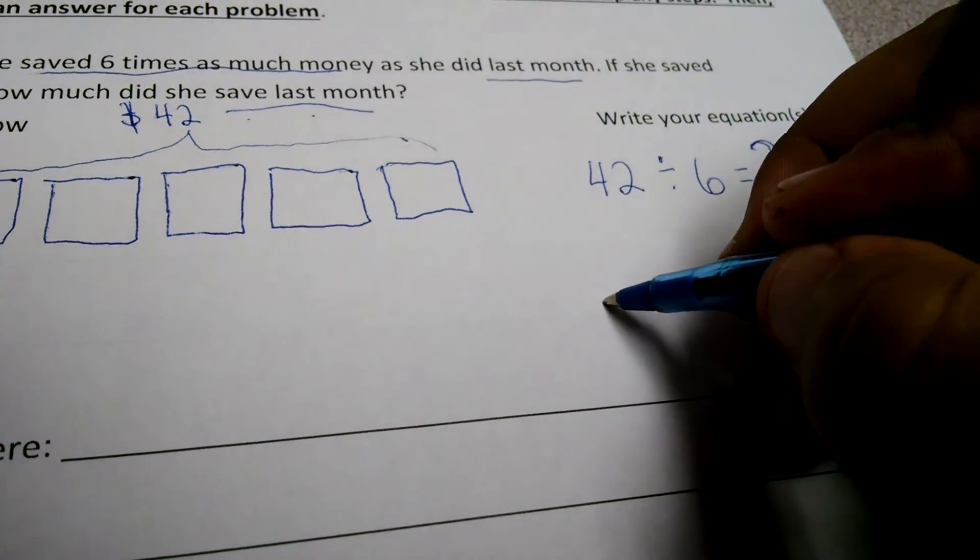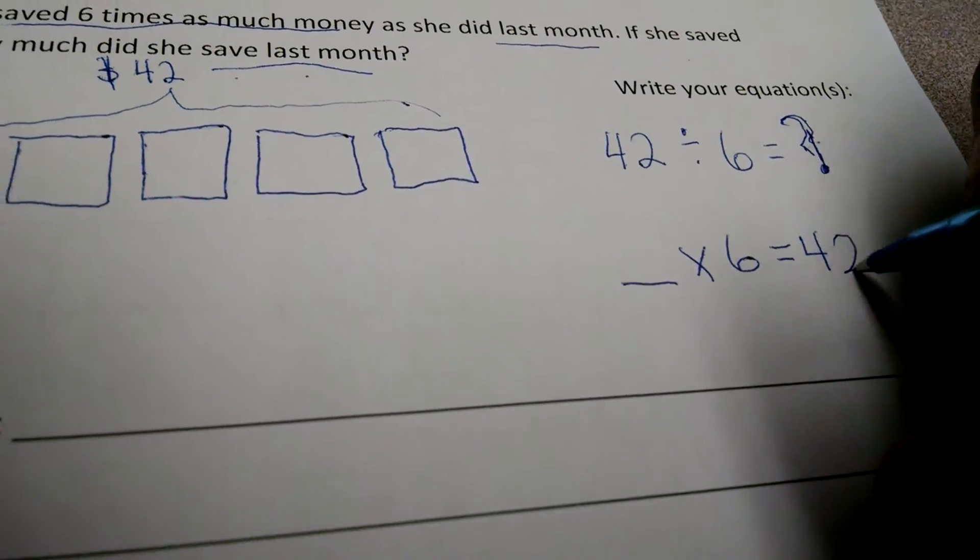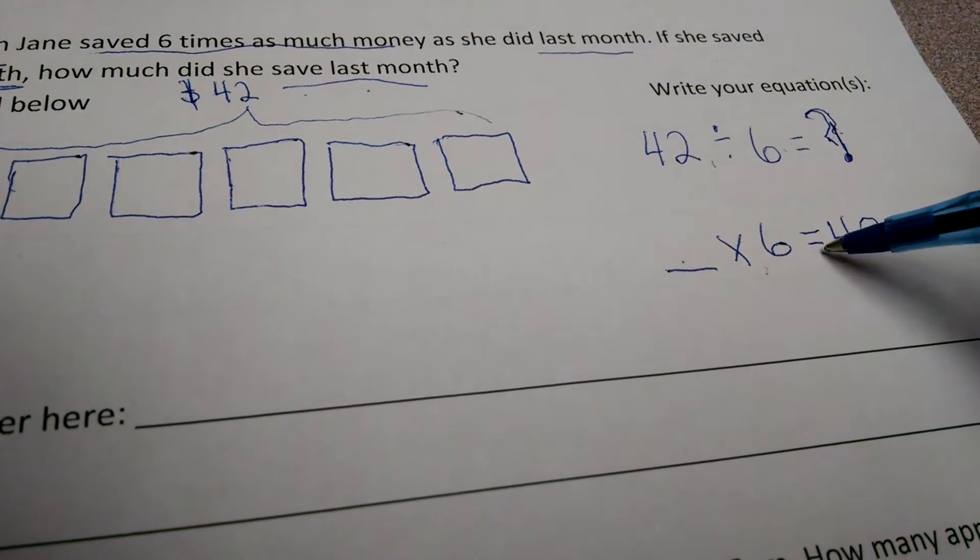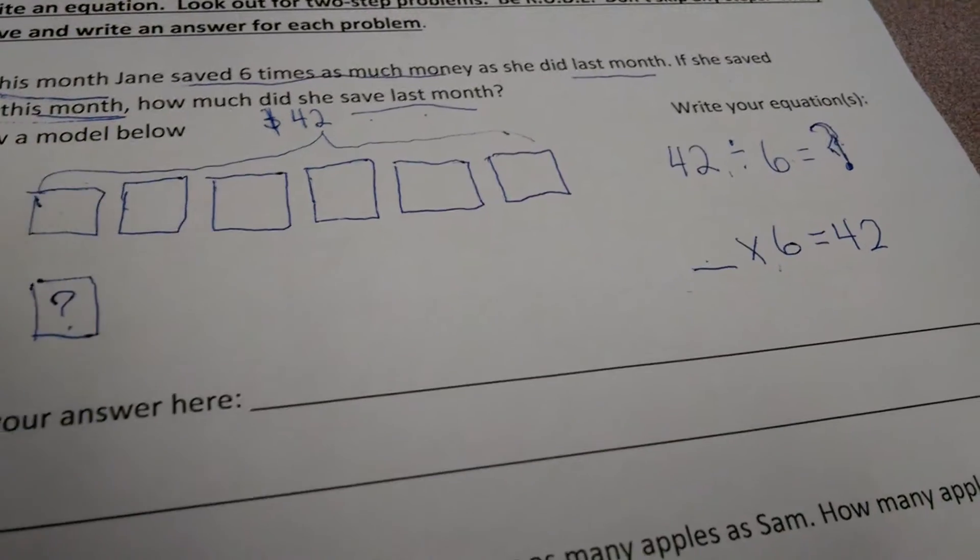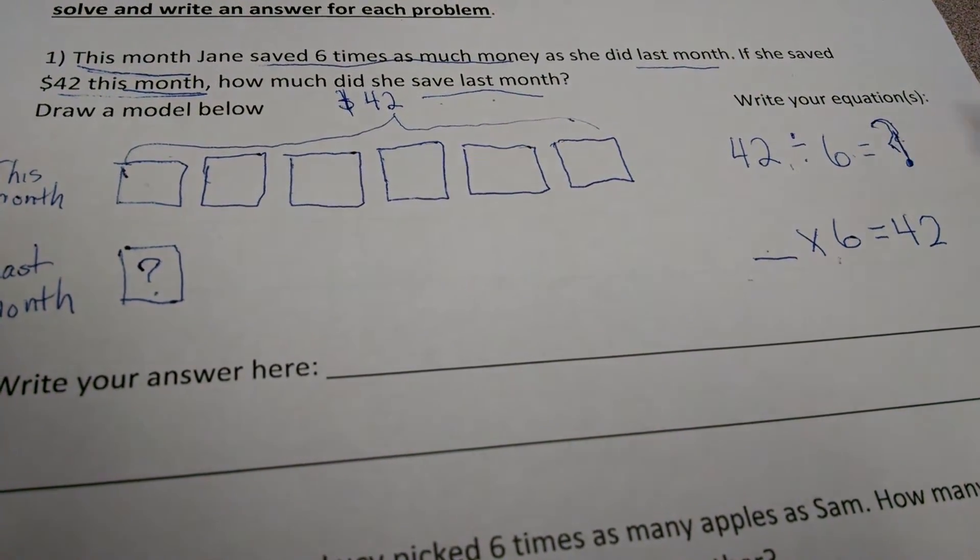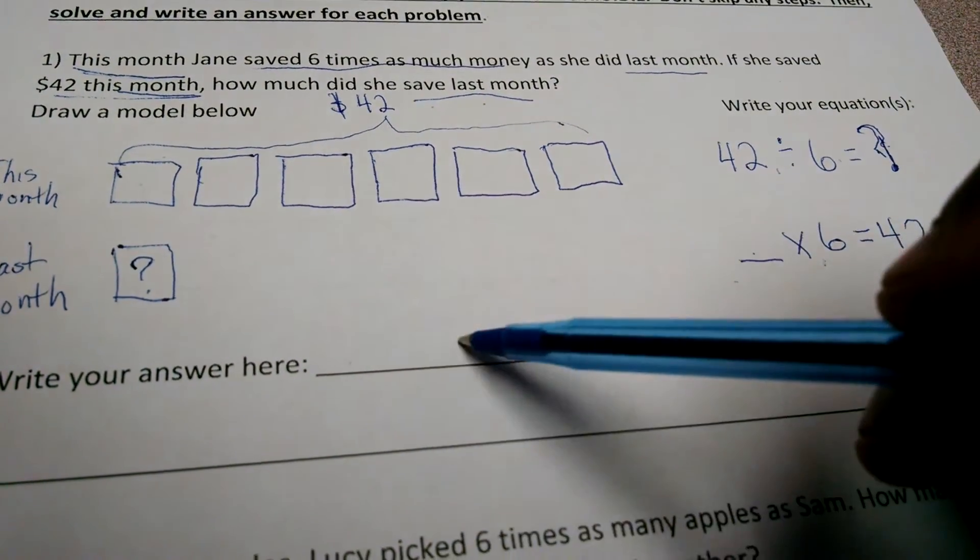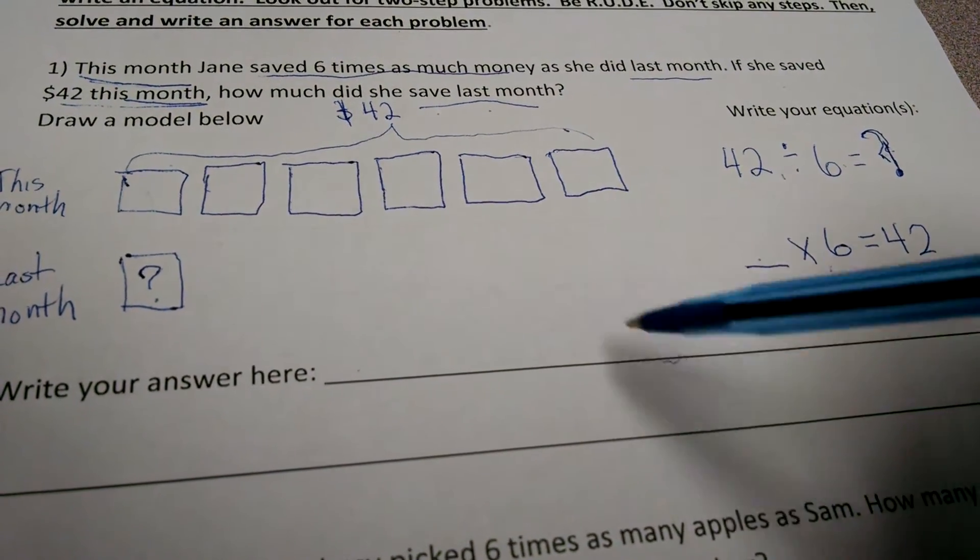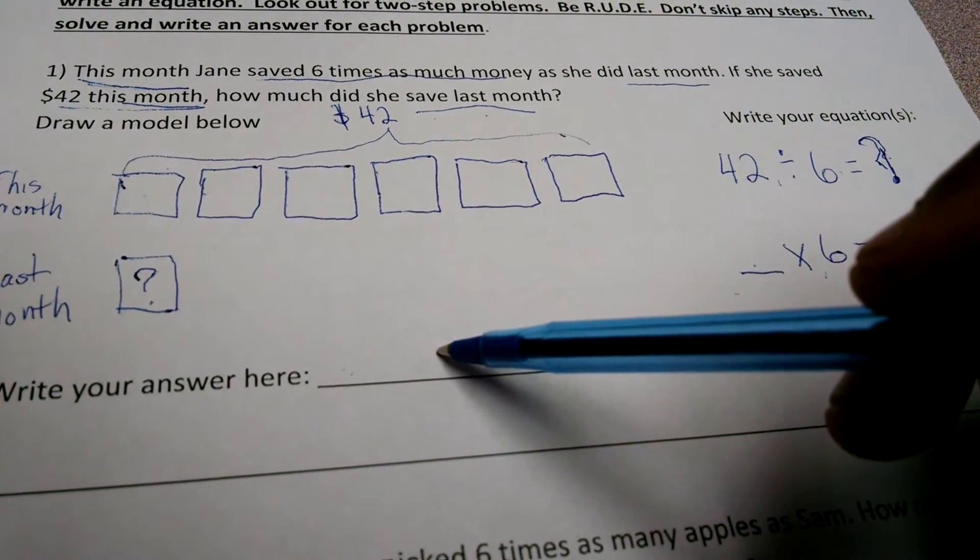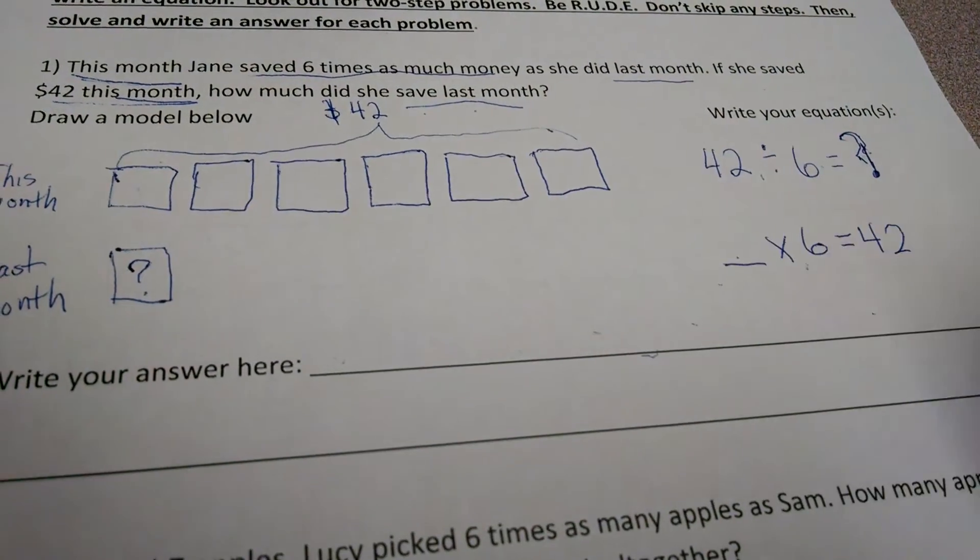Or, I can rewrite it as, what times six equals 42? So, with division, you can write the inverse. This is called the inverse equation. What times six equals 42? Well, I know my basic facts. I know that seven times six is 42. So, I would write my answer here. And when I write my answer, I write it in a complete sentence. So, I would write, Jane saved $7 last month. And I would write that in a complete sentence.